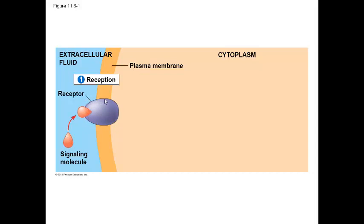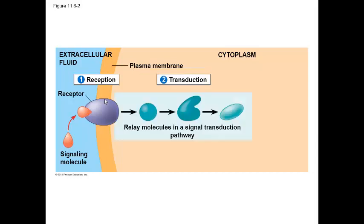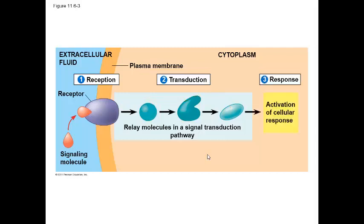Once the ligand binds to the receptor, the next stage is transduction. Transduction is when that message is relayed throughout the cell using a series of proteins called protein kinases. Think of it like passing the baton throughout the cell. Finally, this triggers a cell response. In order for a cell to respond to the ligand, it needs to have the receptor for the ligand. The response of the cell depends upon the pathway within the cell.